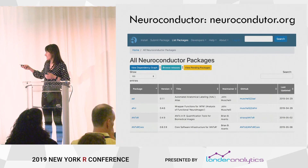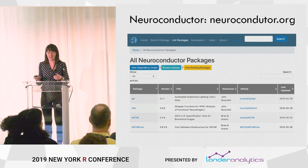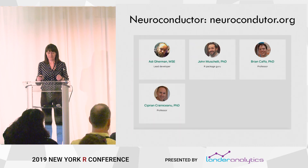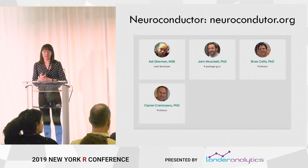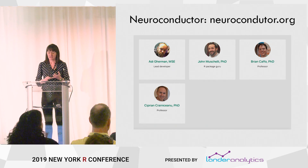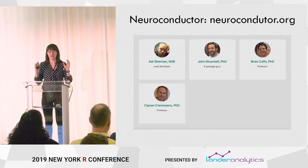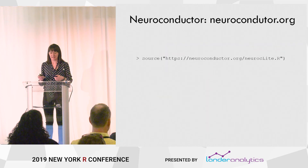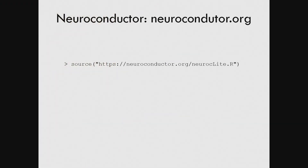Here's the website and a list of some of the packages on there. The team that developed it includes Adi Gehrman, John Micheli, Brian Caffo, and Ciprian Crainiceanu — the visionaries behind Neuroconductor. What Neuroconductor allows you to do is perform all of your neuroimaging analysis completely in R. It all starts with one command: just type source and this website URL, and you're ready to go.